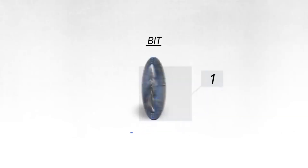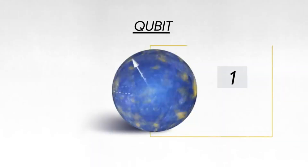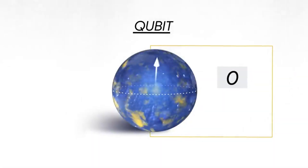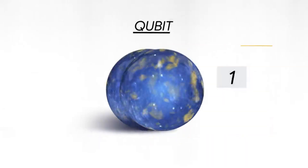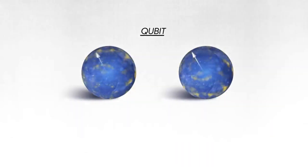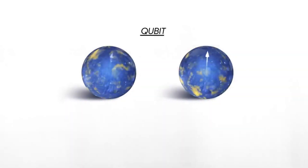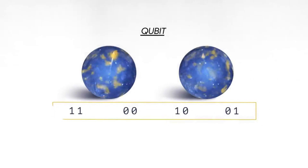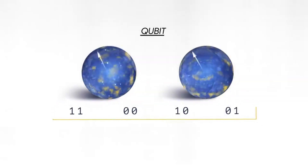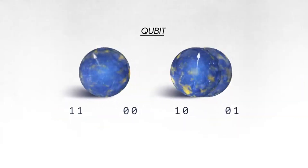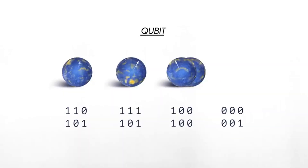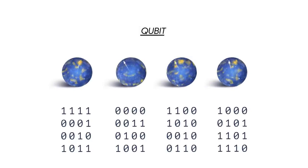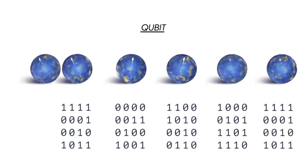The classical bit stores information as a zero or one, and a quantum bit can be both zero and one at the same time. If you have two quantum bits, there are four possible states that you can put in superposition. With three qubits it's eight, four qubits it's 16 — it grows exponentially.